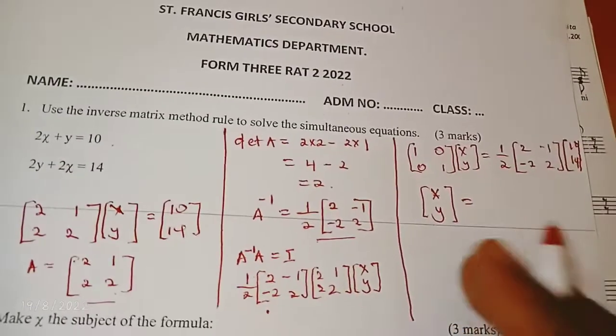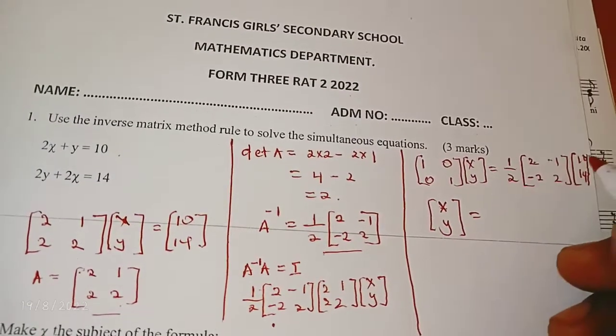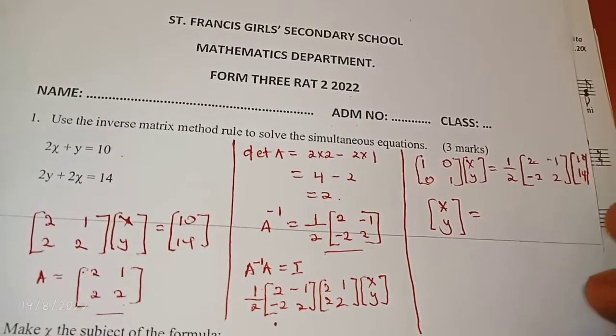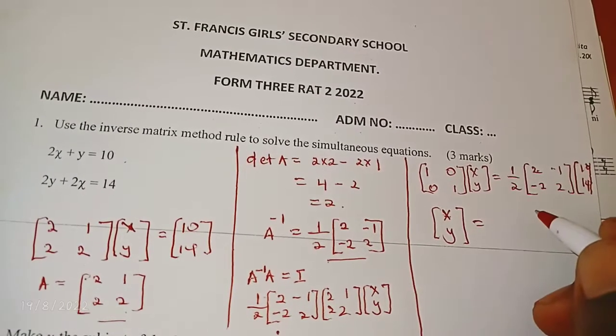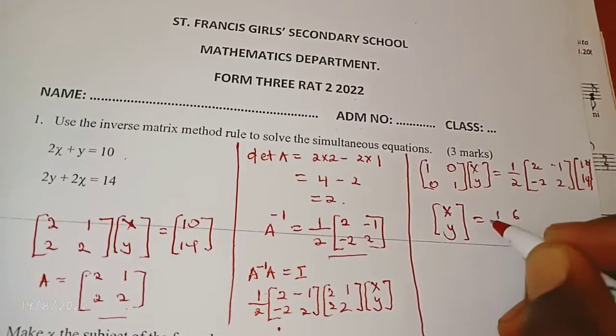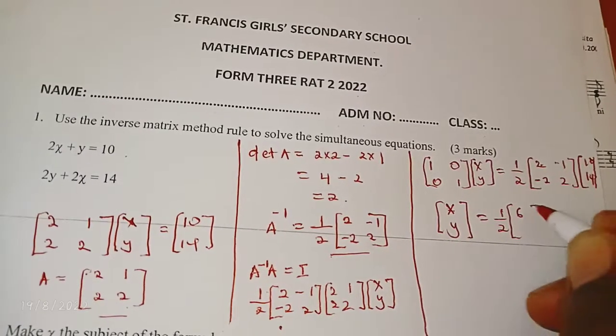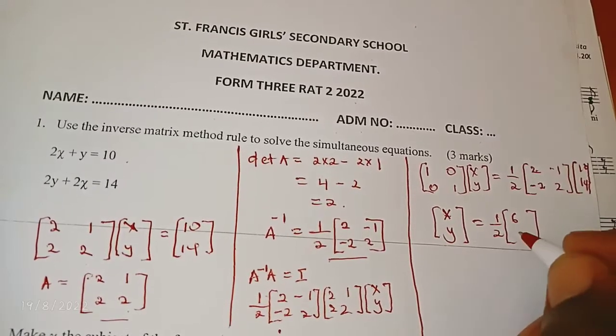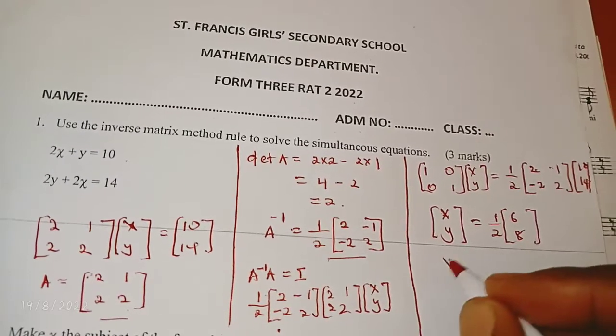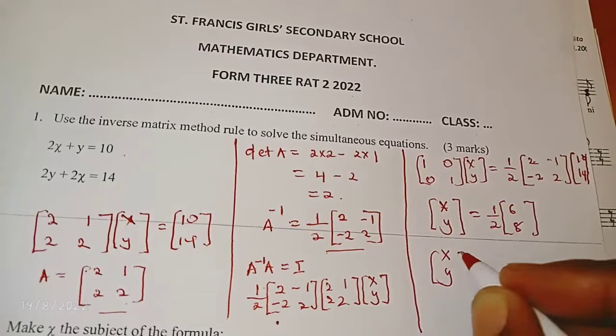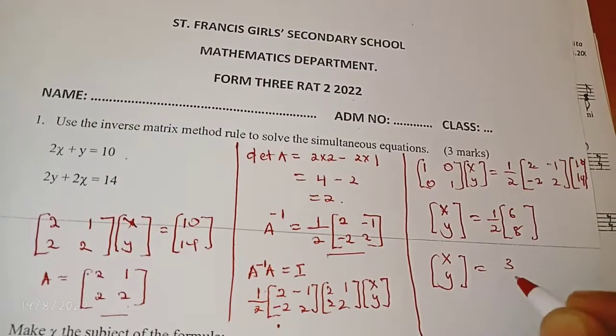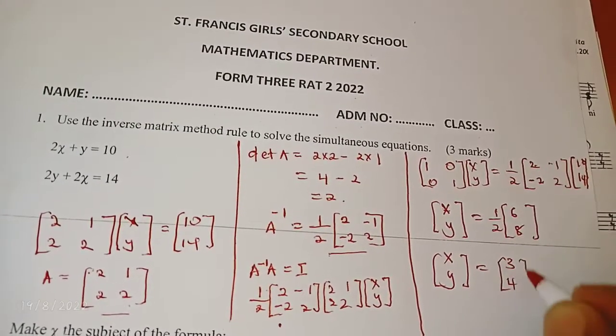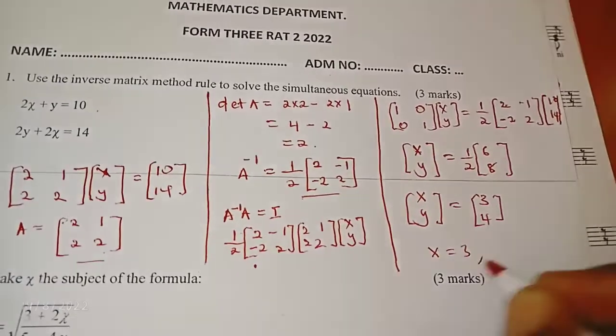And on this side when I multiply, I'm going to get 2 times 10 minus 14, that equals 6, and then I have negative 2 times 10, that's negative 20 plus 28, that's 8. So when you simplify, you get x, y equals 3 and 4. So you write it: x equals 3 and y equals 4, and that's the solution to that problem.